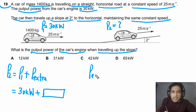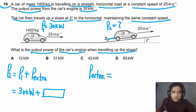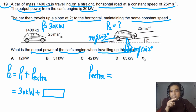P extra equals the extra force times the speed. The extra force is the component of weight the car must work against, which is mg sine of two degrees. The weight of the car acts downward, and its component down the slope — opposite to the angle of two degrees — is mg sine of two degrees. So extra power is required to overcome this component up the slope.